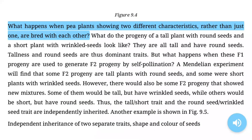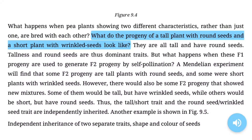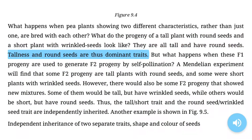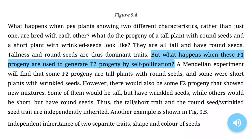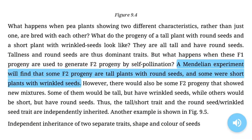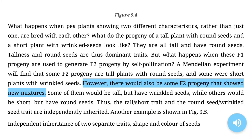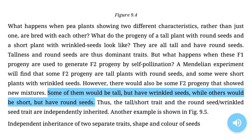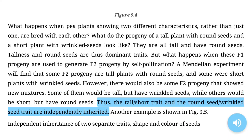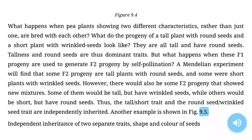What happens when pea plants showing two different characteristics are bred with each other? The progeny of a tall plant with round seeds crossed with a short plant with wrinkled seeds are all tall with round seeds — tallness and round seeds are dominant traits. When these F1 progeny generate F2 progeny by self-pollination, some F2 plants are tall with round seeds, some are short with wrinkled seeds, but there are also new combinations: tall plants with wrinkled seeds, and short plants with round seeds. Thus, the tall/short trait and the round/wrinkled seed trait are independently inherited.